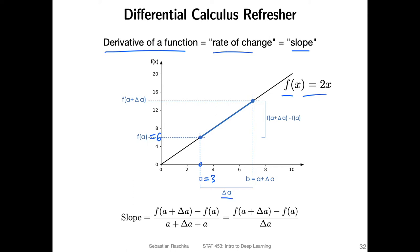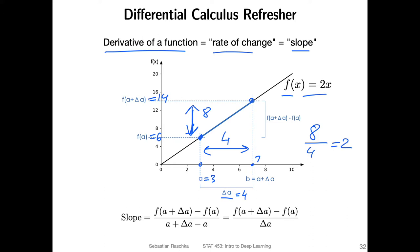Now let's pick a second point. Let's move on the x-axis by delta-a units. Let's move by four points and we arrived at seven here. Then the output corresponding to that would be two times seven, which would be 14. Between these two points, there is a change going on — the change is from six to 14, so that's by eight units. And the change on the x-axis is from three to seven, it's only four units. So we can compute the rate of change or slope: eight divided by four equals two.